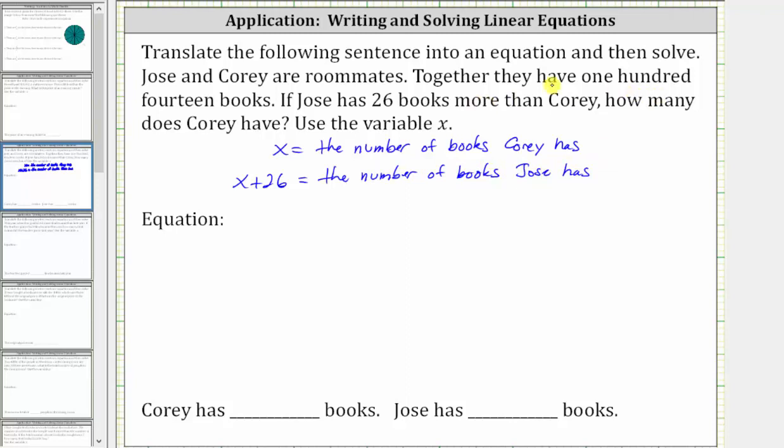Now we know together they have 114 books, which means x plus the quantity x plus 26 must equal 114.